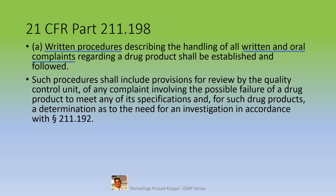Such procedures shall include provisions for review by the Quality Control Unit of any complaint involving possible failure of a drug product to meet any of its specifications, and for such drug products, a determination as to the need for an investigation in accordance with section 211.192. There should be a provision in the procedure to involve quality units — QA or QC or both will review the complaint received. Investigation as per 211.192 includes review of any unexpected discrepancy or failure of the batch or any of its components.